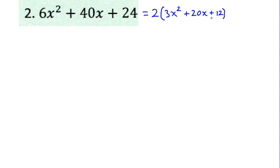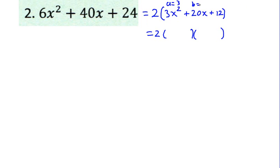We can check to see if this is further factorable. Is this divisible by 3? No, because 3 is not a factor of 20. So we're looking at a quadratic trinomial to factor, which if factorable is going to manifest as a product of two linear binomials. For this situation I like to use the x method, also called bottoms-up. In standard form ax squared plus bx plus c, a equals 3, b equals 20, and c equals 12.